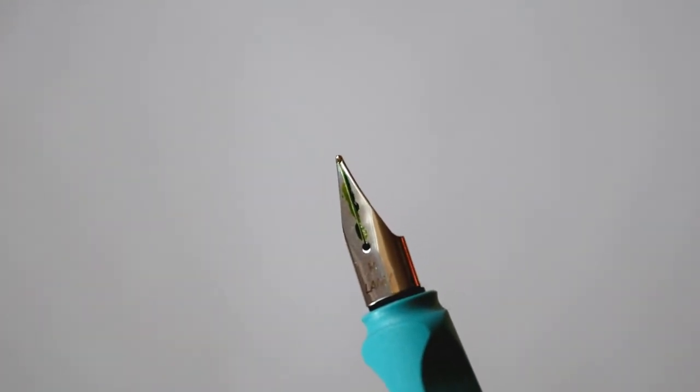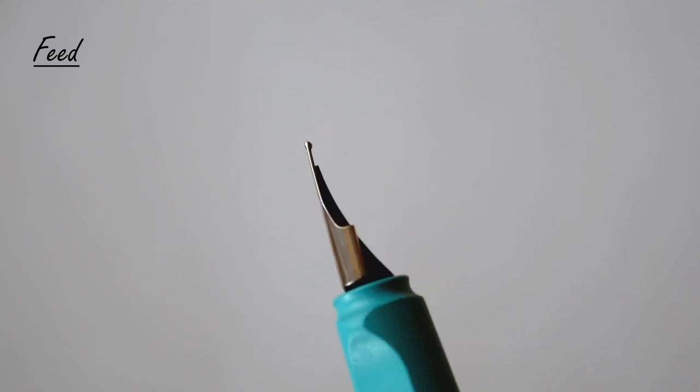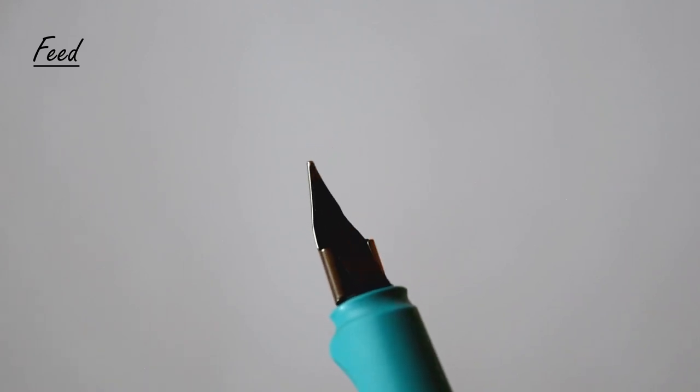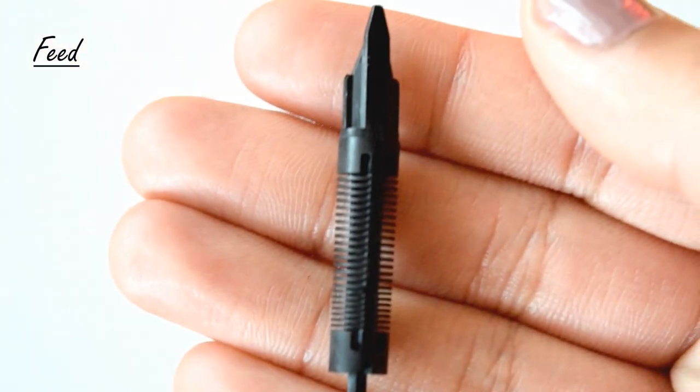Up next we have the feed of the fountain pen. Here I have a Lamy Safari nib, and you can see on the back here this black part is essentially the feed. I have a complete one out for you so that it's easier to explain. The feed is essentially the part of the fountain pen that connects the nib of the pen to the ink reservoir.